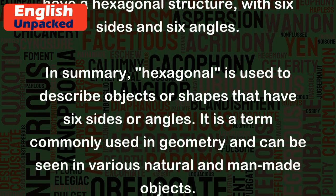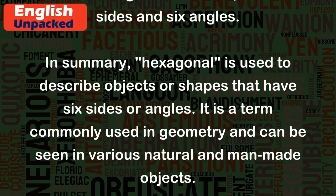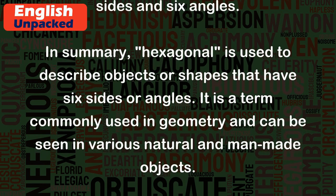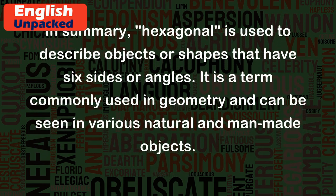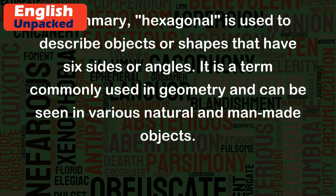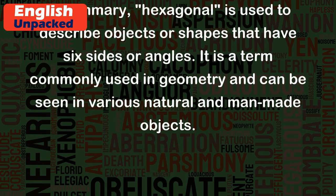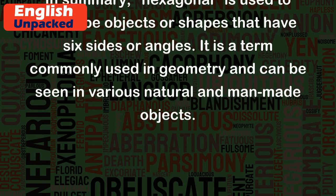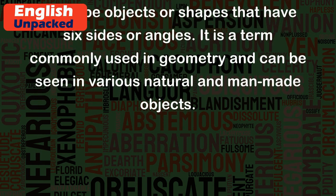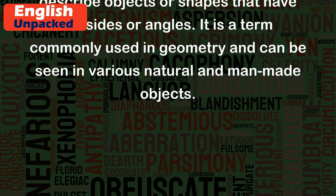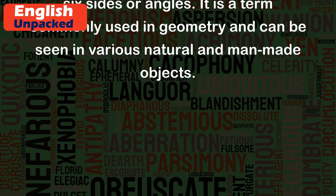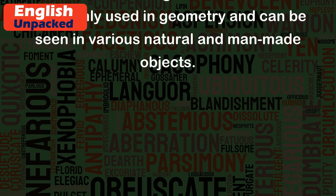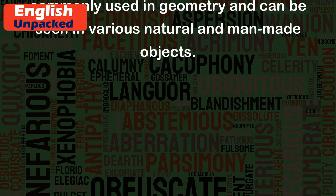In summary, hexagonal is used to describe objects or shapes that have six sides or angles. It is a term commonly used in geometry and can be seen in various natural and man-made objects.